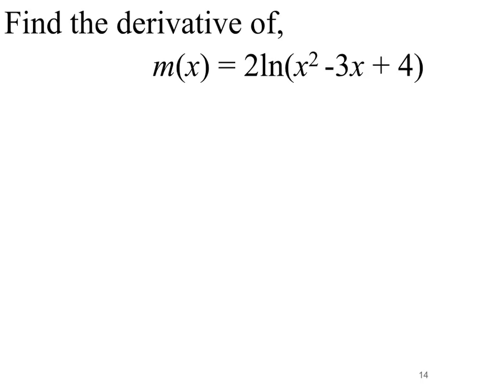For a second example, the function m of x equals 2 times the natural log of x squared minus 3x plus 4. The 2 is just a constant, so we won't be concerned with that until the very end. We have the natural log function, and inside it we have a second function, x squared minus 3x plus 4. The natural log function is the outer function f, and the inner function u is x squared minus 3x plus 4. So m prime of x equals f prime of u times u prime.